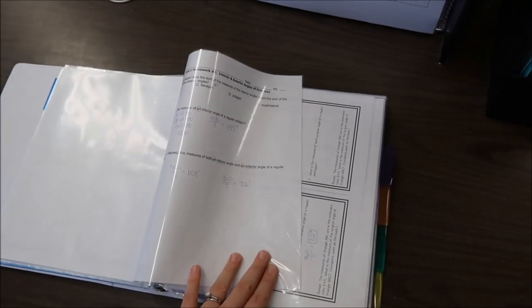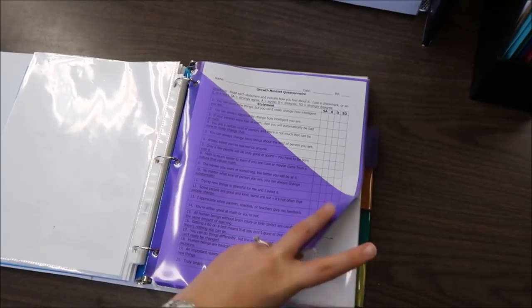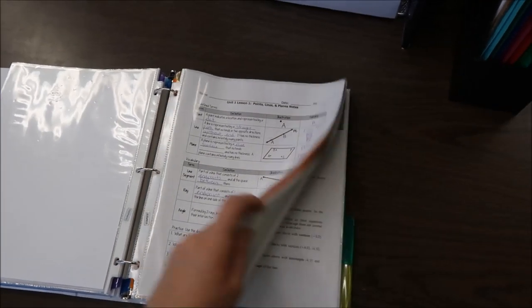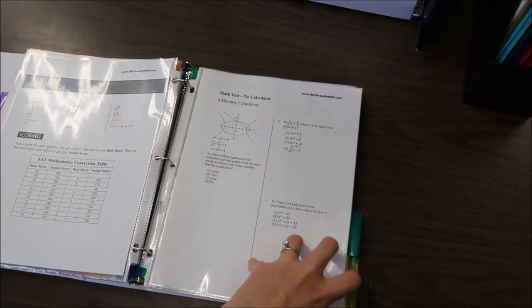So basically I have answer keys from homeworks, exit tickets, quizzes, and eventually the test in here. My next section I have for general geometry and basically all the same types of things in here. And then my next section would be my SAT prep. I have all that stuff in there.